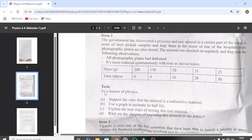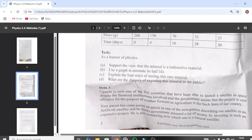In the task, as a learner of physics, support the view that the mineral is a radioactive material. Part B: use the graph to estimate its half-life. Part C: explain the best way of storing this rare mineral. Part D: what are the dangers of exposing this mineral to the public? That was Item 2.